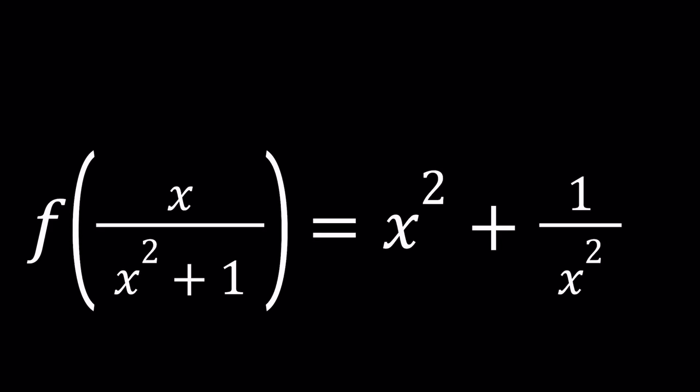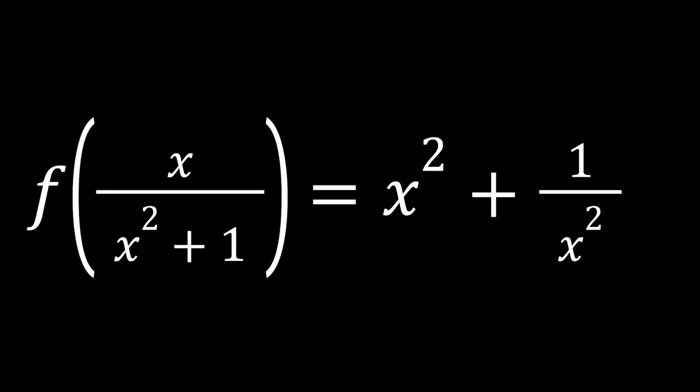Hello everyone. In this video, we're going to be solving a functional equation. We have f of x over x squared plus 1 equals x squared plus 1 over x squared. We're going to be solving for f, which means finding an expression for f of x in terms of x. But that x is not going to be the same as this x, so don't get confused. I'll be presenting two methods.